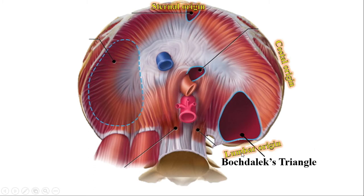The lumbar origin is the portion of the diaphragm arising from the lumbar vertebrae. The costal origin is the portion originating from the ribs — we can see the ribs here. This triangle is situated between the lumbar origin and the costal origin of the diaphragm, which is why this triangle is also known as the lumbar costal triangle.